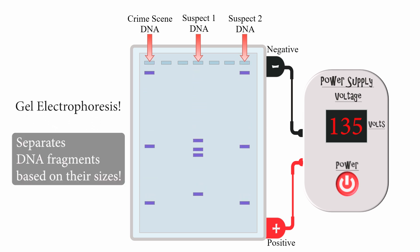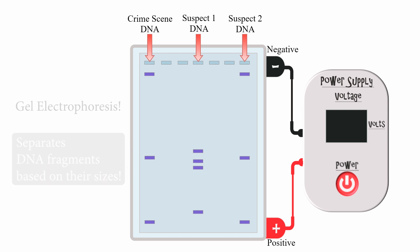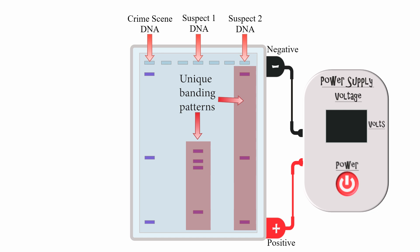Gel electrophoresis separates pieces of DNA based on their size, creating unique banding patterns for different individuals. But how does this work? Let's find out.